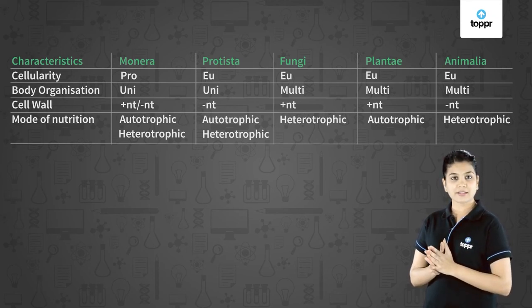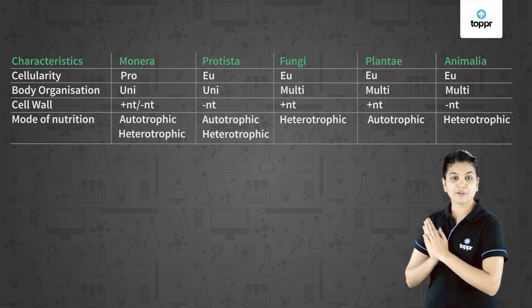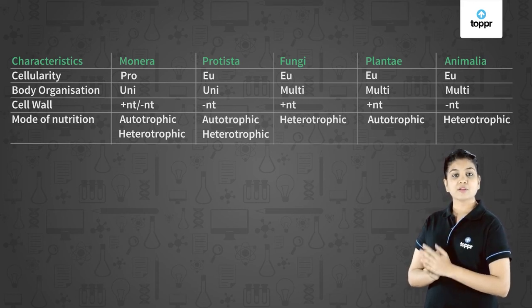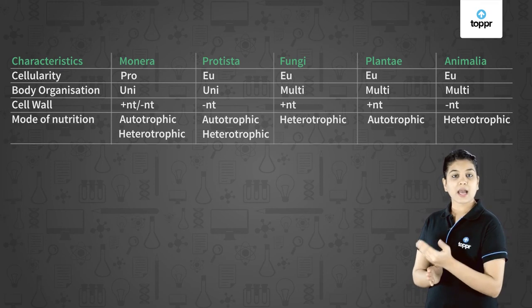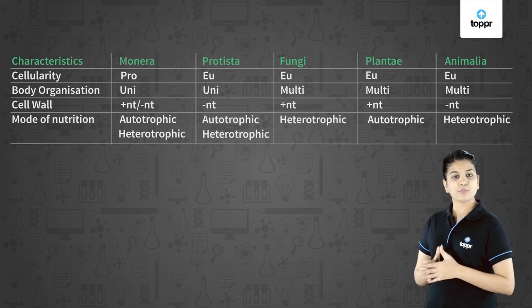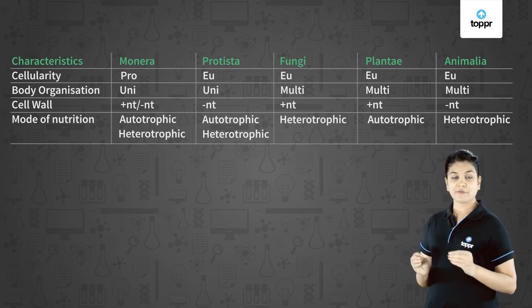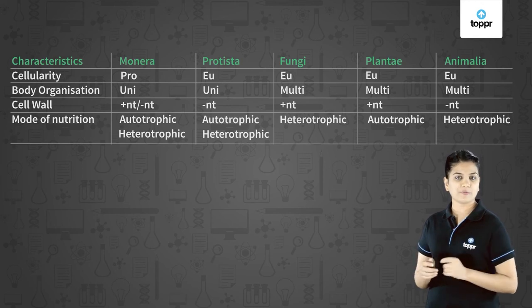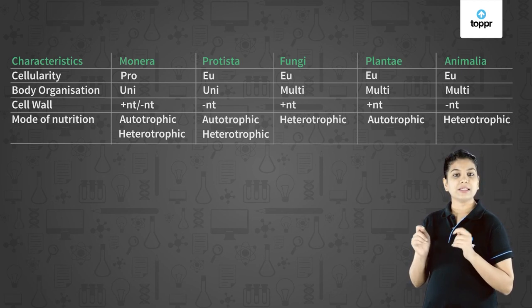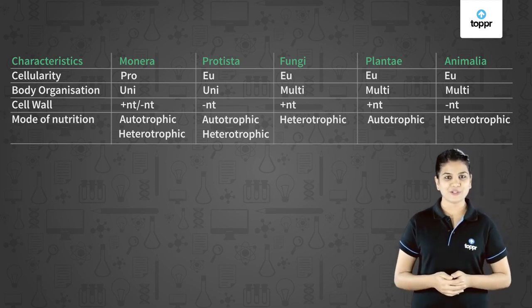Last characteristic is the mode of nutrition. The monerans and Protista both have both kinds of mode of nutrition - both autotrophic as well as heterotrophic. Fungi show only heterotrophic mode of nutrition, whereas plants show only autotrophic mode of nutrition, and lastly the animals also show heterotrophic mode of nutrition.